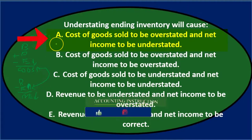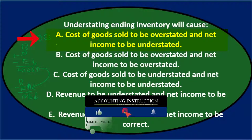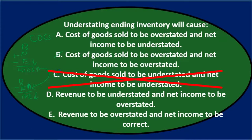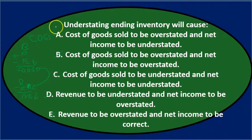Going through the options: A — cost of goods sold overstated and net income understated — that matches. B — cost of goods sold overstated but net income overstated — incorrect. C — cost of goods sold understated — not right. D and E deal with revenue, which isn't relevant here. The answer is A — understating ending inventory will cause cost of goods sold to be overstated and net income to be understated.